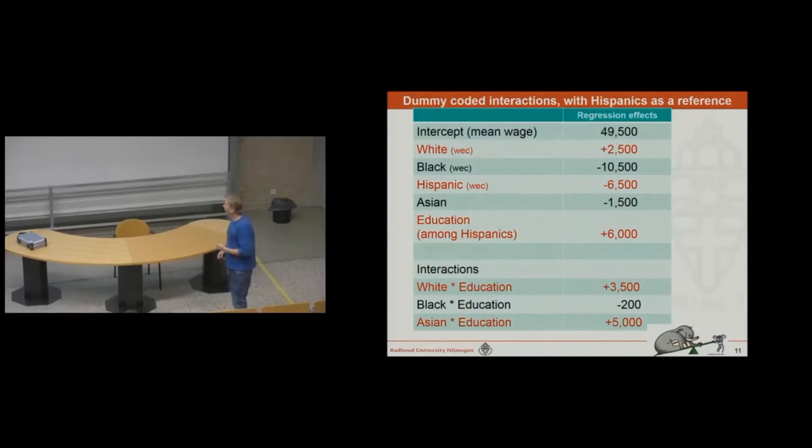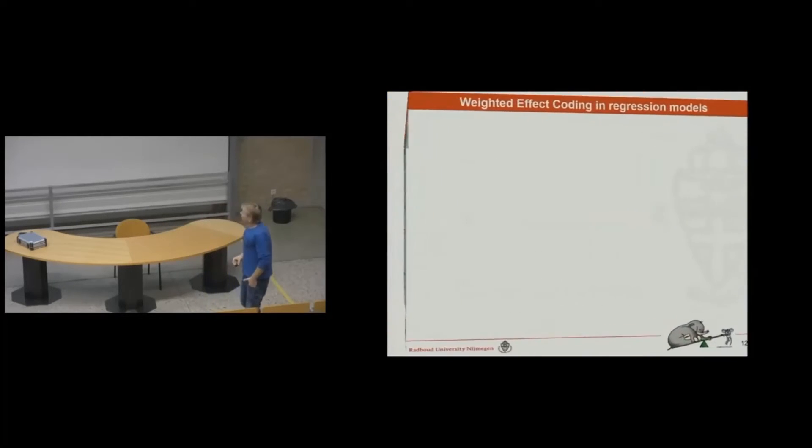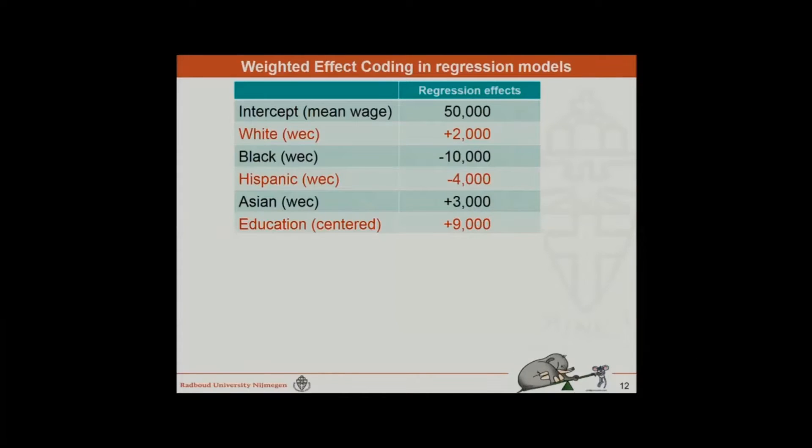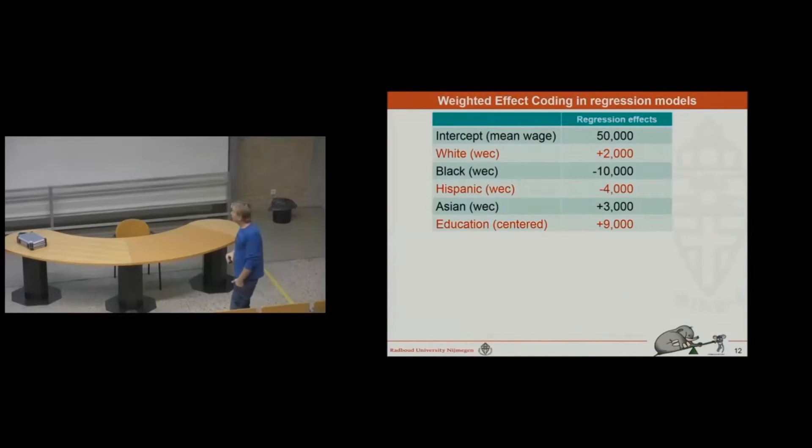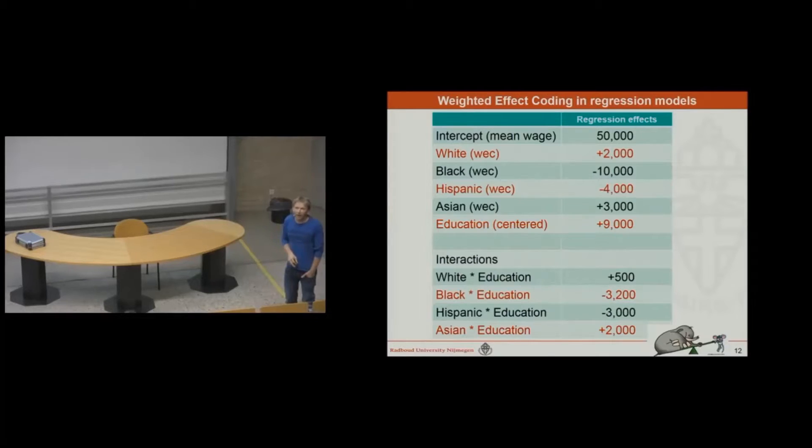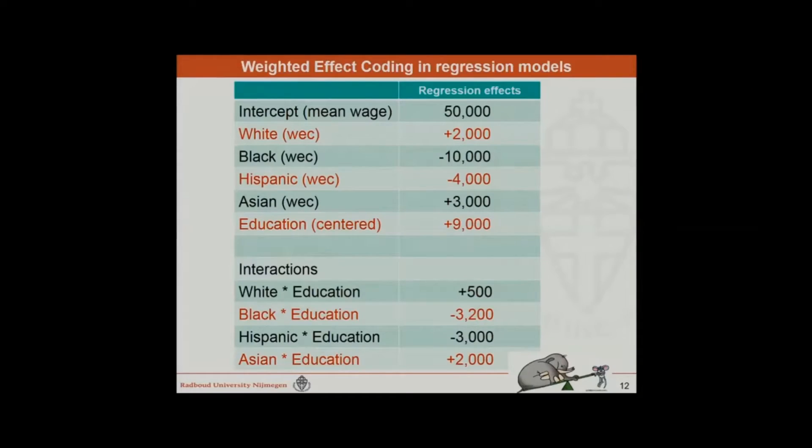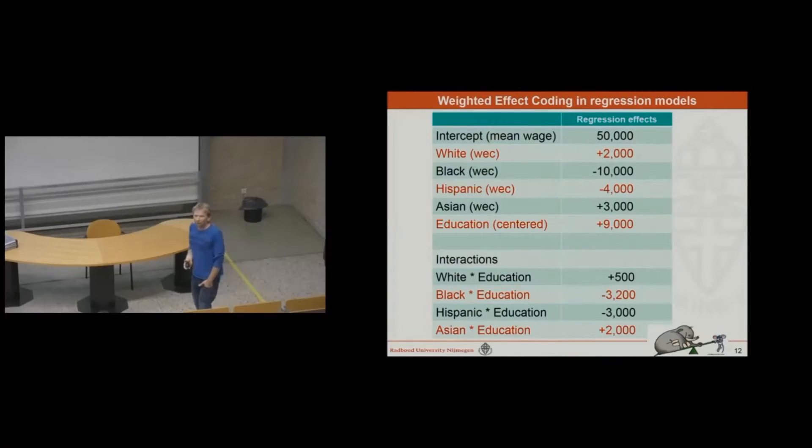So, we have to look for another solution. And now weighted effect coding comes in. If we take weighted effect coding in regression models, we have the following again. These are the exact same numbers I just showed you in the previous slide. We have $9,000 again as educational effect, and here we have the deviations from the sample mean. But now we are going to introduce our weighted effect coded interaction parameters. And let's see what happens. Nothing happens. I will do it again. Nothing happens. And I think that is one of the beautiful aspects of weighted effect coding interactions.